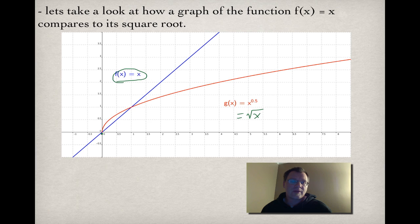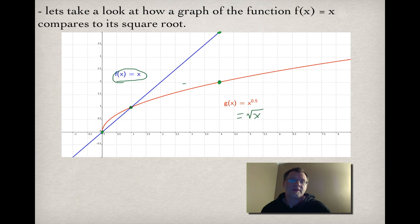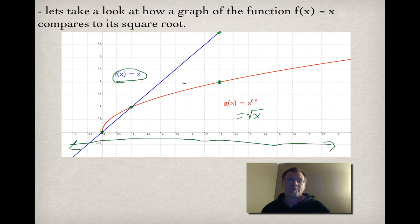As you can see, there are two points that don't change. Every other point on the blue original function is transformed by simply taking the square root. For example, where the height is 4, taking the square root of 4 gives 2. The square root of 1 gives 1, and the square root of 0 gives 0. Notice there is no red graph below the x-axis, because you cannot take the square root of a negative number — that is a restriction on the domain and range.